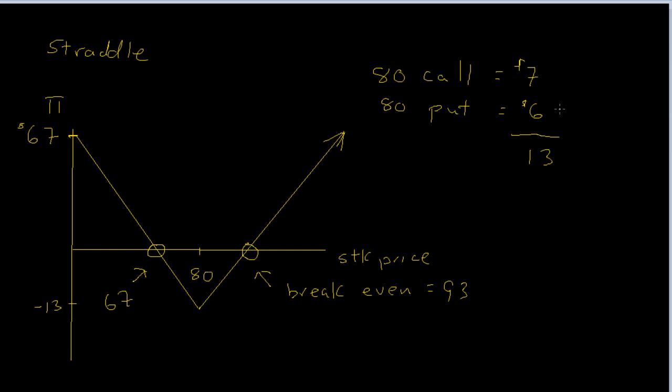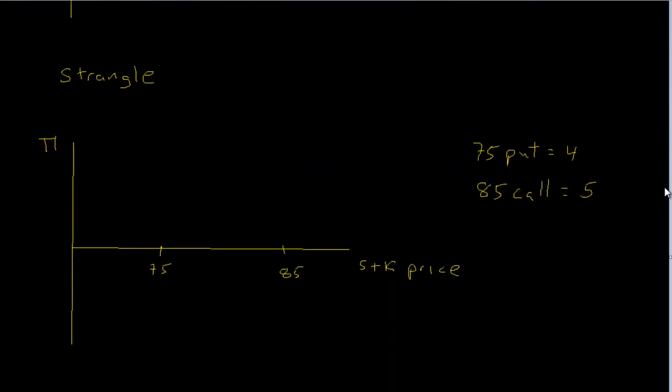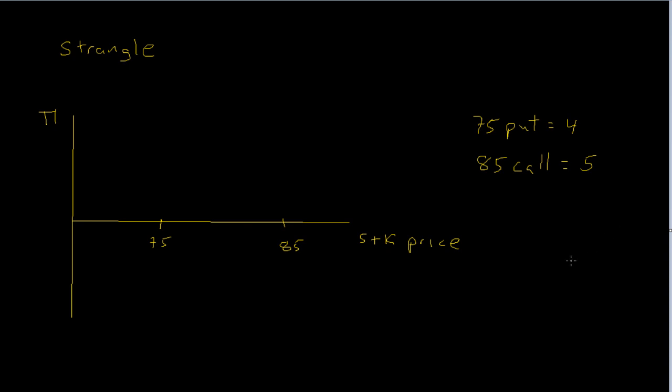And the question is, is there a cheaper way to do this? And actually there is, and let's take a look at something referred to as a strangle. In a strangle, we're going to do essentially the same thing, except in this case, instead of buying a put and a call with the same exercise price, we're going to buy puts and calls with different exercise prices.